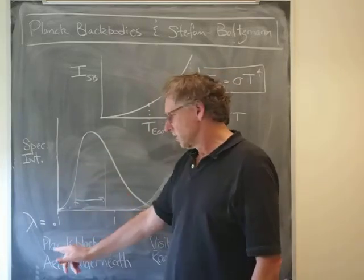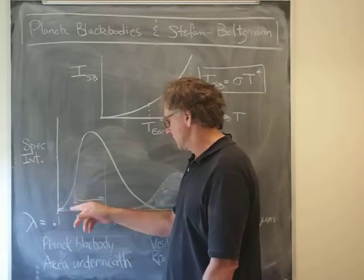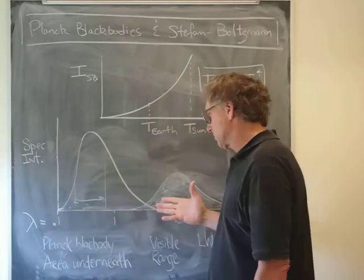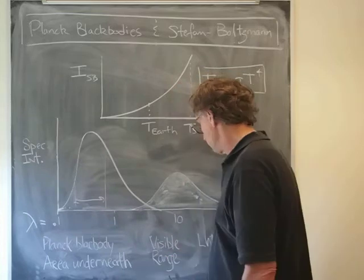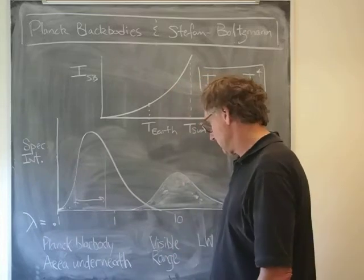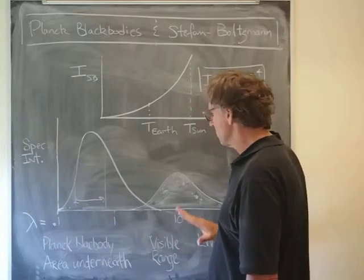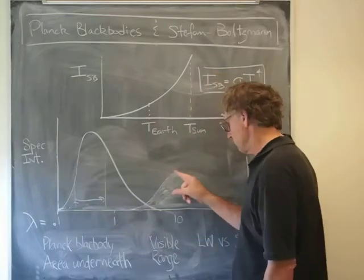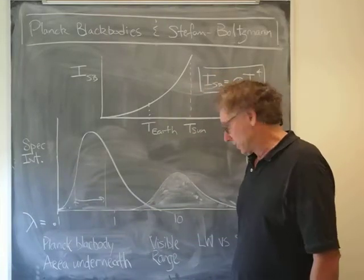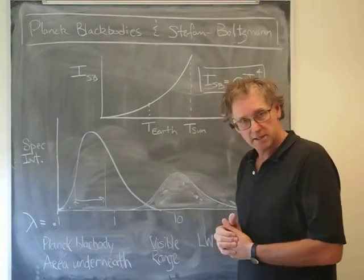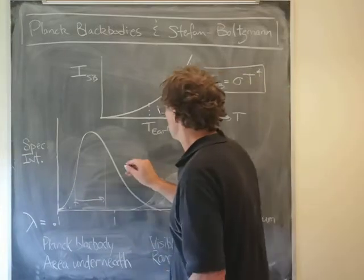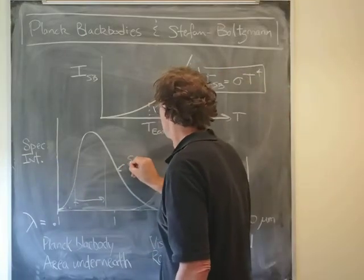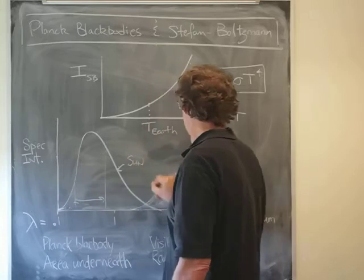I've also drawn a Planck blackbody curve for something at the temperature of the Earth. Let me annotate that: this is a Planck blackbody for the Sun, and this is a Planck blackbody for the Earth. You notice a couple things about this—it's lower.